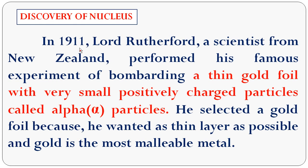Regarding the discovery of the nucleus: in earlier classes you studied John Dalton's model and J.J. Thomson's atom model. In this chapter you will learn about the Rutherford atom model and the Bohr atom model. In 1911, Lord Rutherford, a scientist from New Zealand, performed his famous experiment of bombarding a thin gold foil with very small positively charged particles called alpha particles. He selected gold foil because gold is the most malleable metal, allowing a very thin layer.